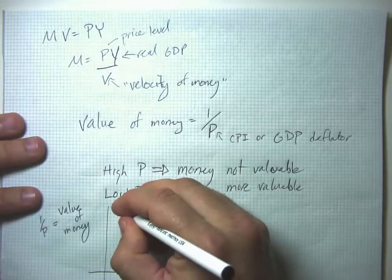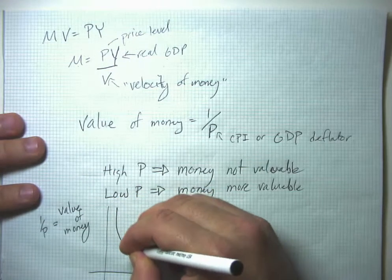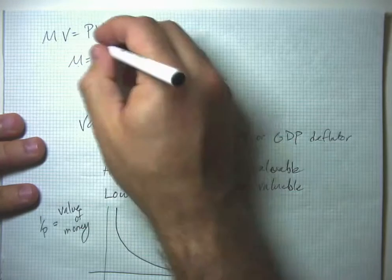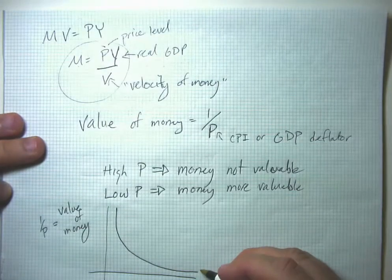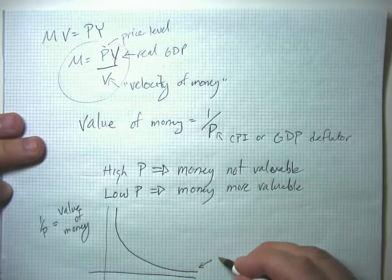So if we do that and we think about what this thing would look like, we would have this nice parabolic shape here. So this is the money demand curve.